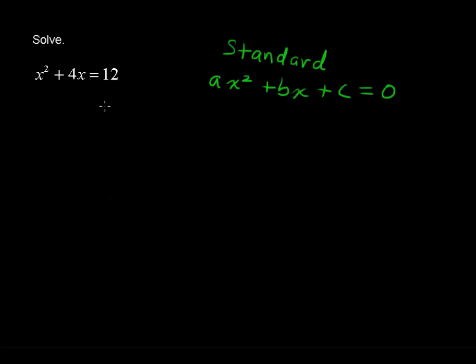To do that, we're going to subtract 12. We have a positive 12 here, so we're going to undo that. Subtract 12 from each side, and that will give us x squared plus 4x minus 12 equals 0.